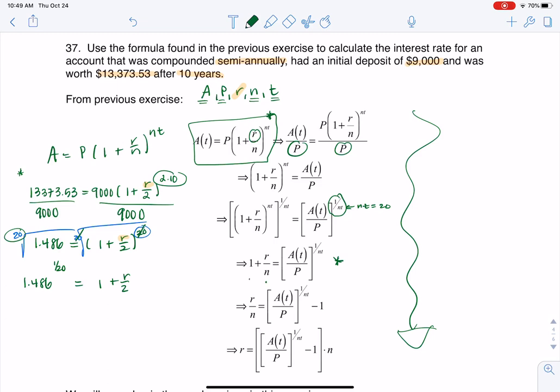So I'm arriving at this equation, 1 plus R over n is my initial amount divided by my principle raised to that exponent. And I have a 1 plus R over 2 because we compounded interest two times.